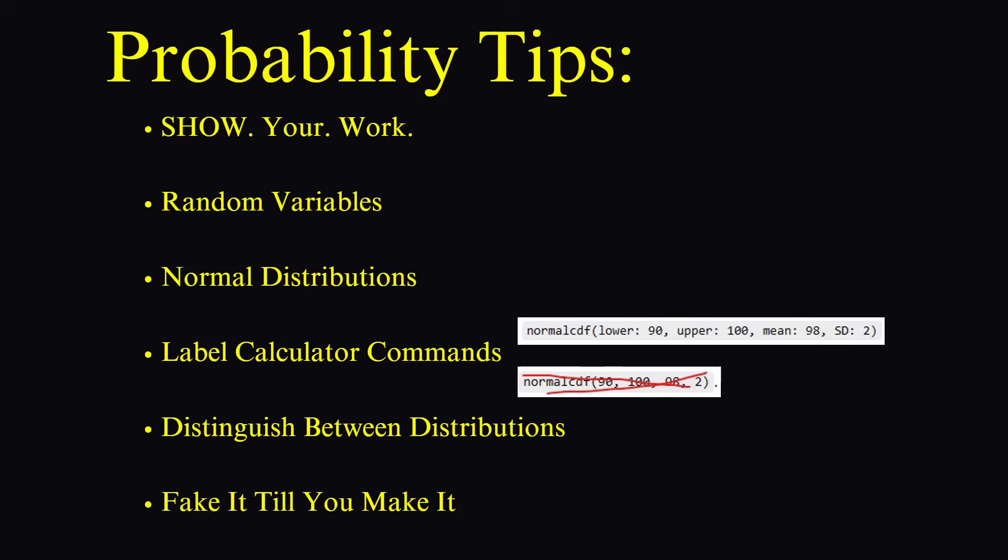If you're stuck on an earlier part, make up a reasonable value so you can keep going. Just remember, probabilities must be between 0 and 1. And don't quit. Sometimes the last part might be the easiest. And if you use a wrong answer from a previous part, but use it correctly in the next part, you will earn credit for the correct use of that incorrect answer.